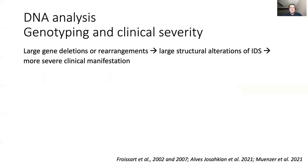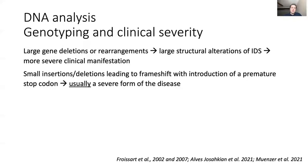Based on DNA analysis, we know that if there are large gene deletions or rearrangements, it leads to large structural alterations of the IDS enzyme linked to more severe clinical manifestation. Also, small insertions and deletions that lead to frame shifts and the introduction of a premature stop codon — where the DNA basically stops producing the full enzyme — these are usually linked to a severe form of the disease.